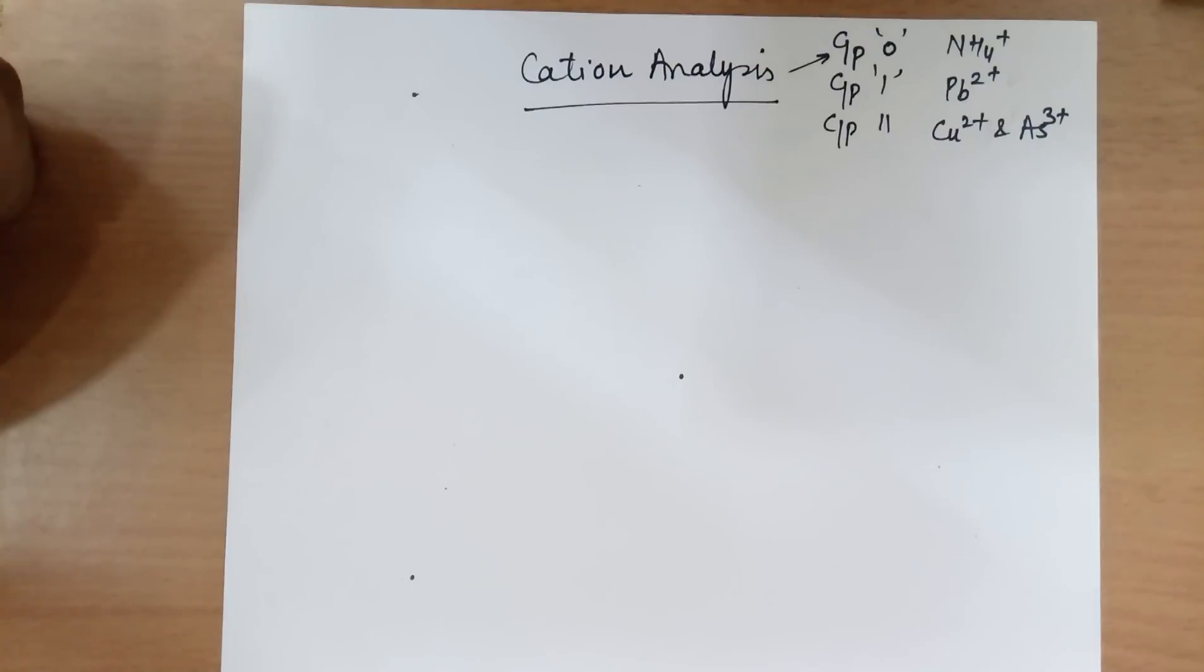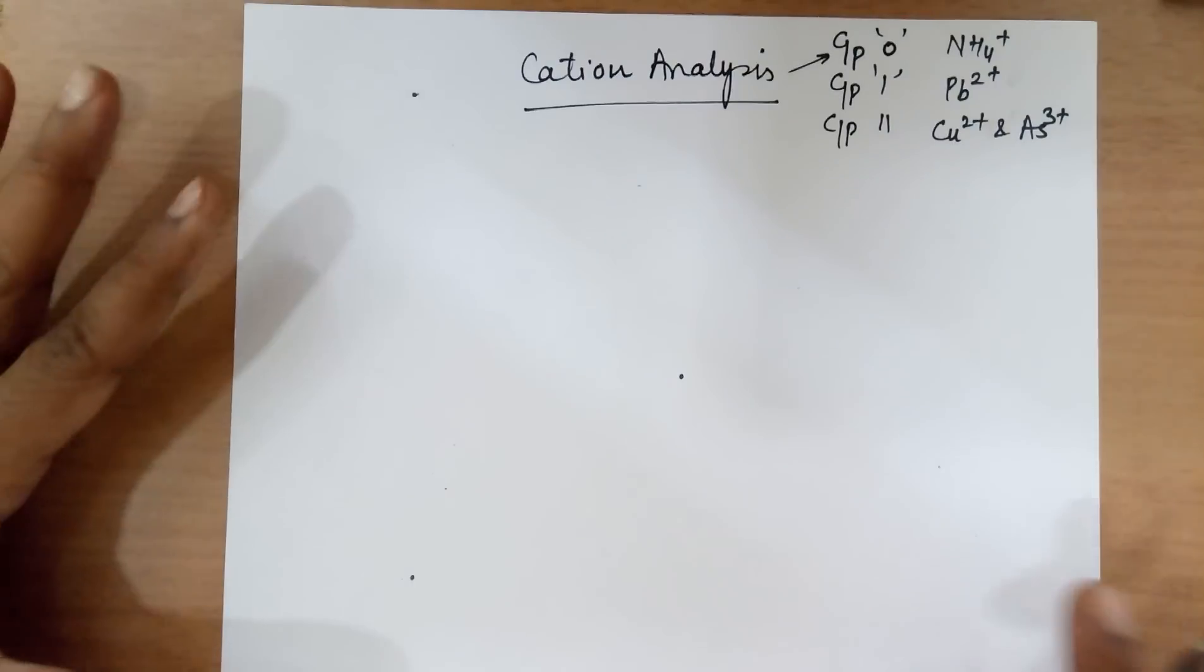The salt analysis that you do in the lab has got two parts to it, anion and cation. The cations are divided further into six groups on the basis of the precipitation of the ion. Right now, we will be only taking up three groups: 0, 1, and 2.